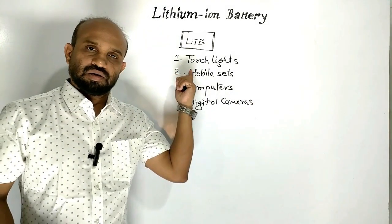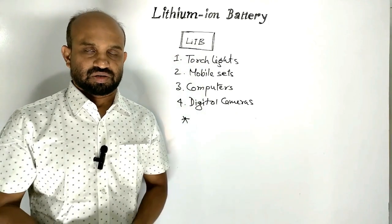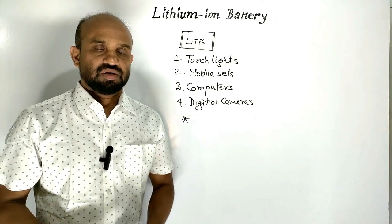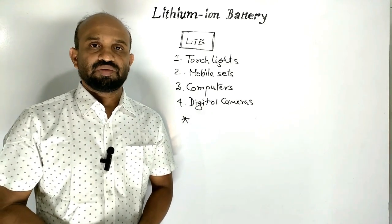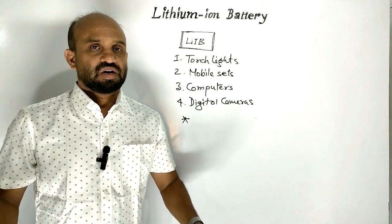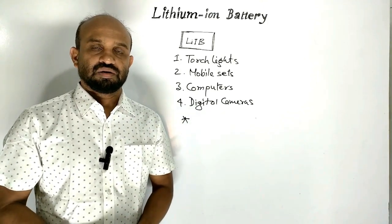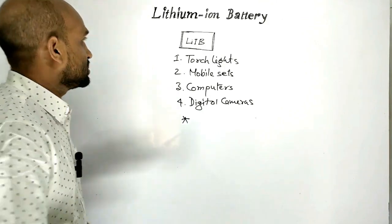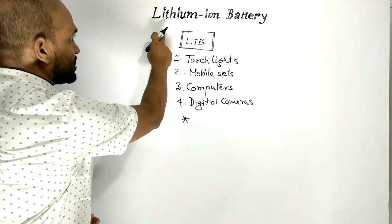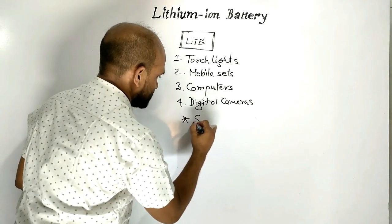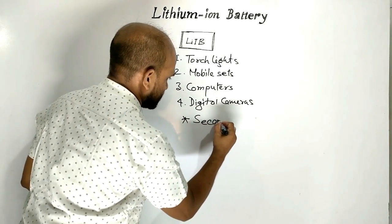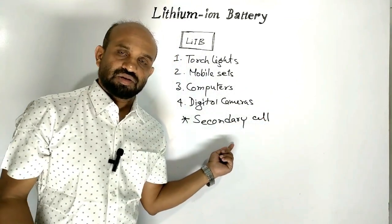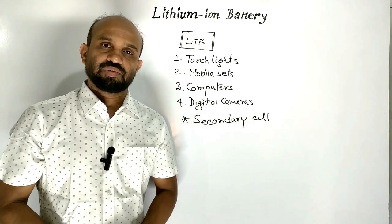Lithium-ion battery is a kind of secondary battery because this battery can be recharged. The battery which can be recharged is a secondary battery, and the battery like a lithium battery that cannot be recharged is a primary battery. As lithium-ion battery can be recharged, it is a secondary cell.